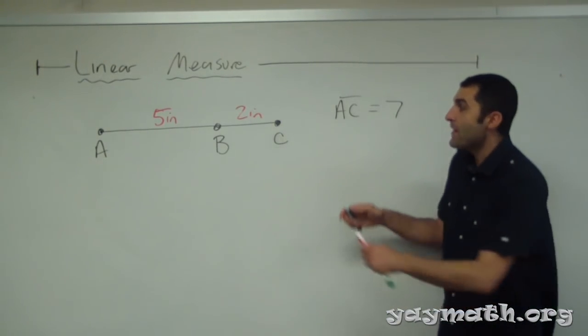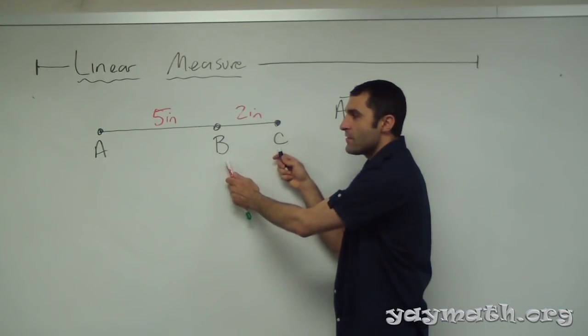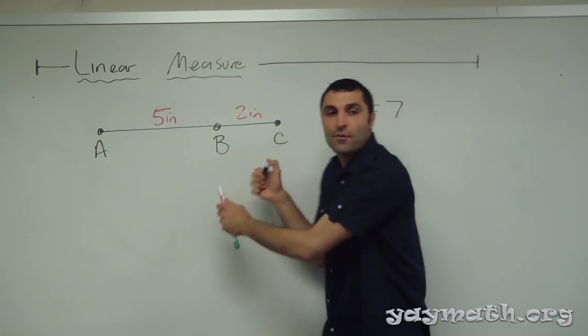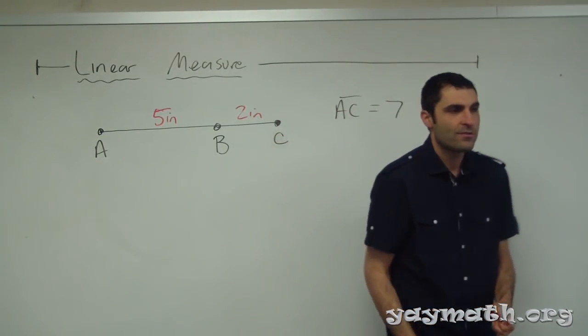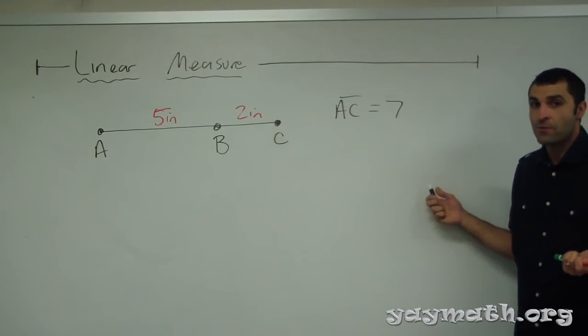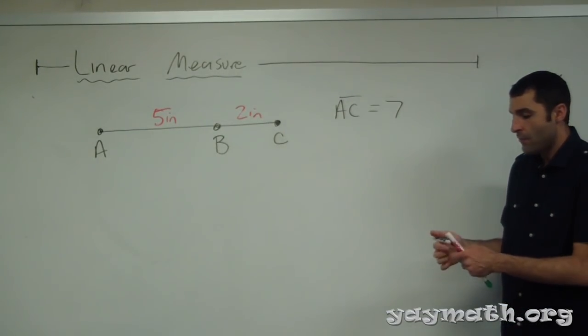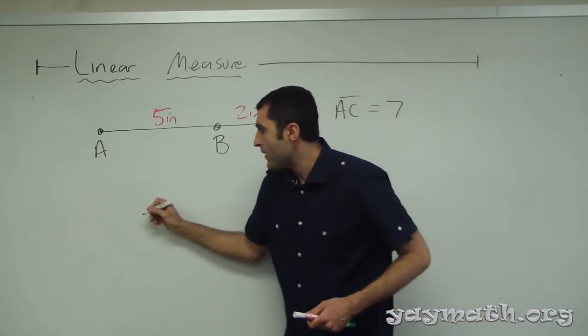If BC is two, AC would be seven. Are we comfortable with AC being seven? Yeah, all right, cool. That's pretty much the idea of what we're doing.